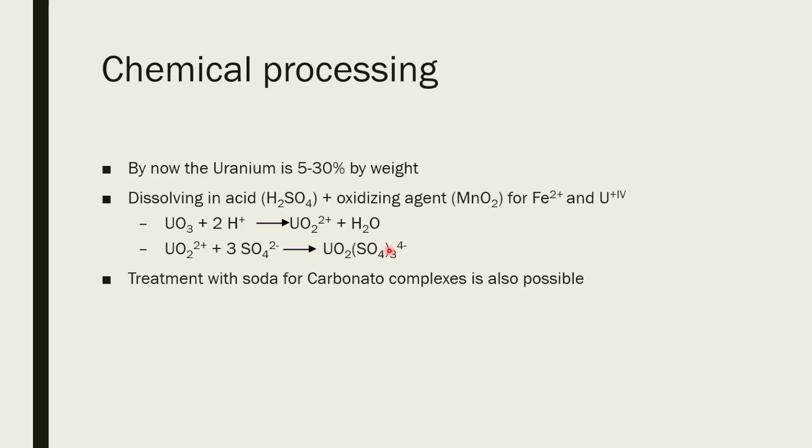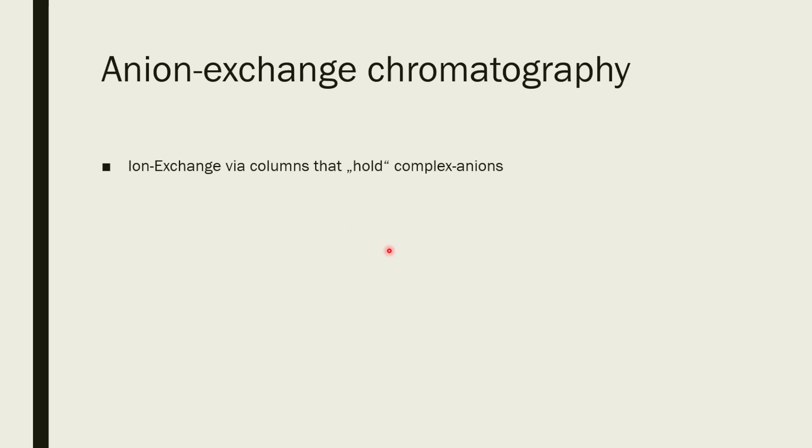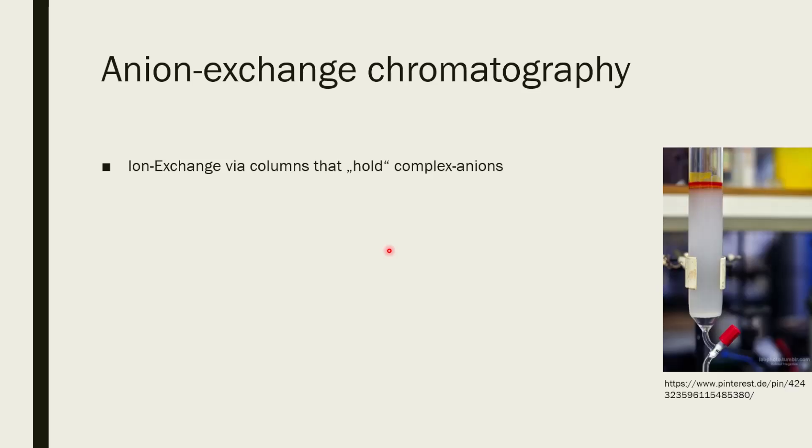Because after that, what is most commonly known is the anion exchange chromatography. An ion exchanger is a column that has ion exchanger on it. And these can hold certain complex ions. In this case, you will have complex anions. This is what a column looks like. And it's filled with all of these beads of ion exchanger.